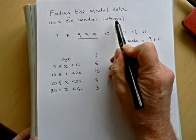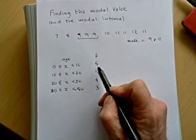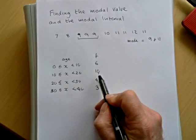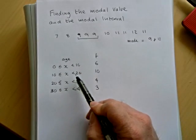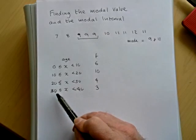Now if you're asked what the modal interval is, well here are some intervals, intervals of age. We've been told that there are six people aged between naught and ten, ten people aged between ten and twenty, four between twenty and thirty, and three from thirty up to forty.